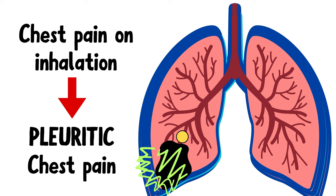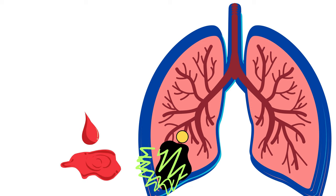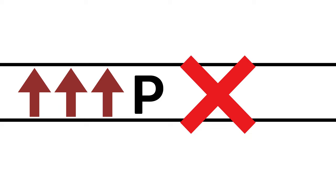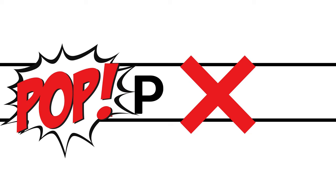The dead or infarcted tissue can bleed, leading to blood in the sputum, which is called hemoptysis. Hemoptysis can also happen due to increased pressure in pulmonary vessels. Whenever there's a block in a tube, pressure can build up — that's Bernoulli's principle. This buildup of pressure can rupture the blood vessel, resulting in bleeding.